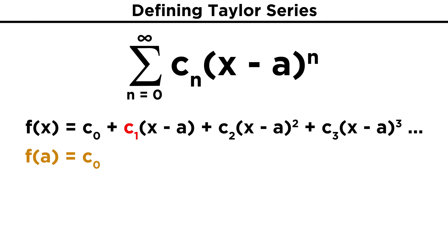This is where differentiation comes into play. Let's say we take the derivative of this function. c zero will go away, since the derivative of any constant is zero. Then for the second term, x minus a will go away, leaving c one.